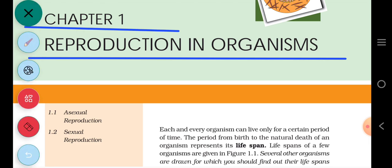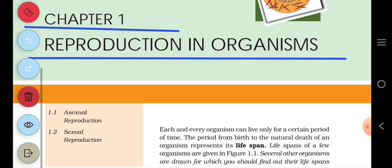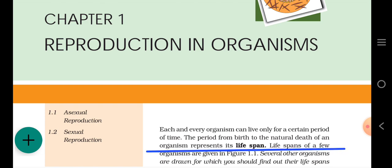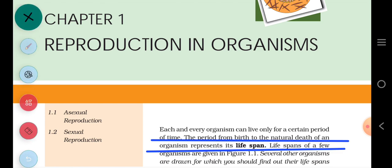In today's class, we will cover reproduction and types of reproduction. In the first class, we covered life span in detail. Life span — what is it basically? You should learn the simple definition: the period from birth to the natural death of an organism represents its life span. For any living organism, the time duration between birth and death is called life span.